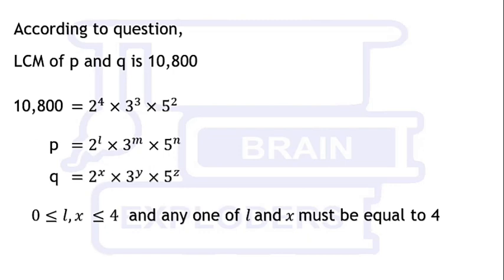Since in 10,800, 2 is present with its fourth power, that's why both l and x must be less than or equal to 4. Besides this, one of them must be equal to 4, because if both of them are less than 4, then in their LCM also, 2 would be present with some lower power.